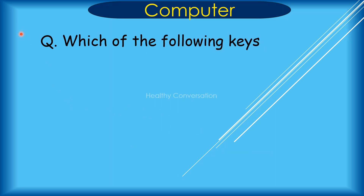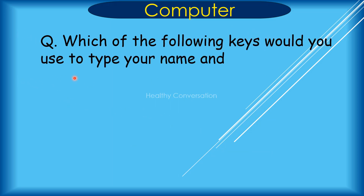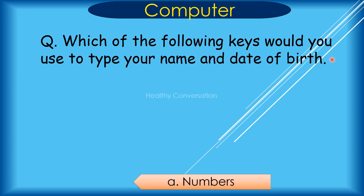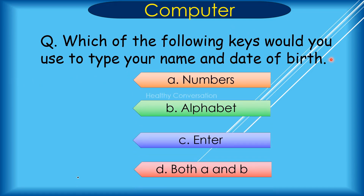Question: Which of the following keys would you use to type your name and date of birth? A. Numbers, B. Alphabet, C. Enter, D. Both A and B. Correct answer is D. Both A and B.